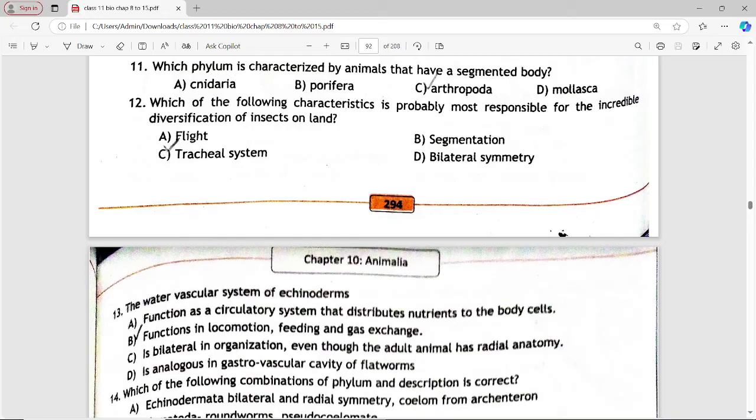Next is: which of the following characteristics is probably most responsible for the incredible diversification of insects on land? Options are flight, segmentation, tracheal system, bilateral symmetry. Answer is option C, tracheal system.